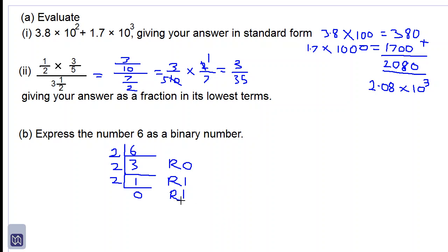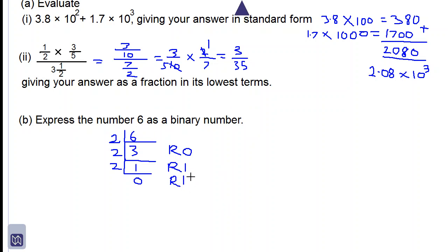Our answer, starting from the digit at the bottom and moving upward, we write answer equals 110. So 6 as a binary number is 110.